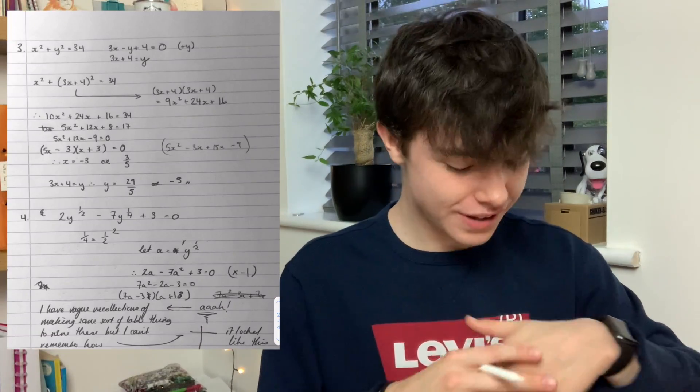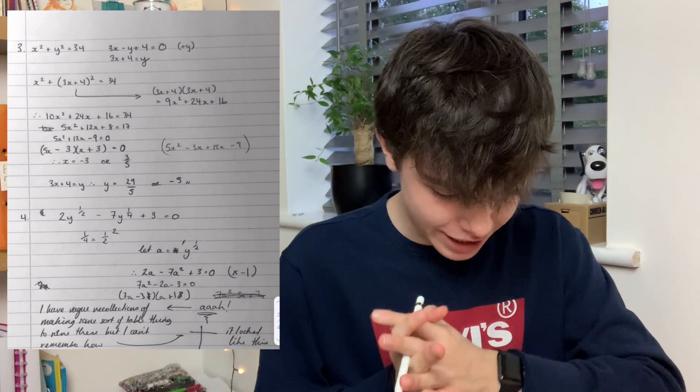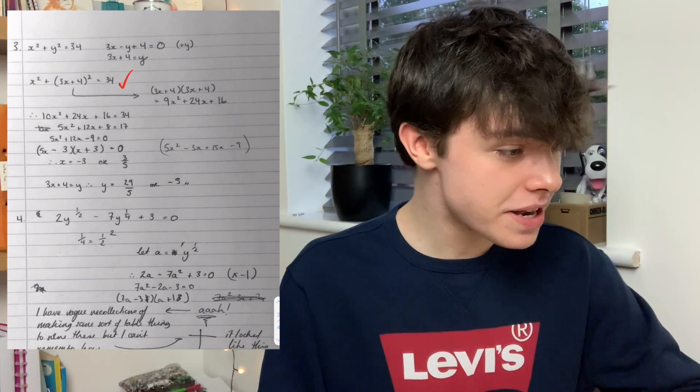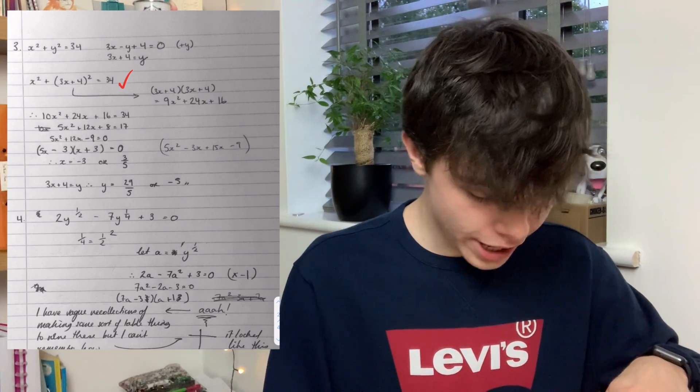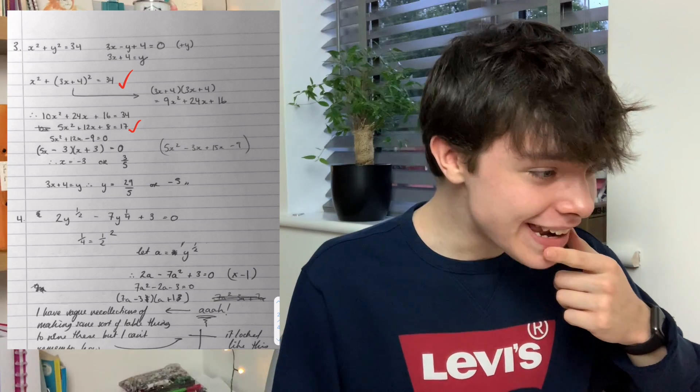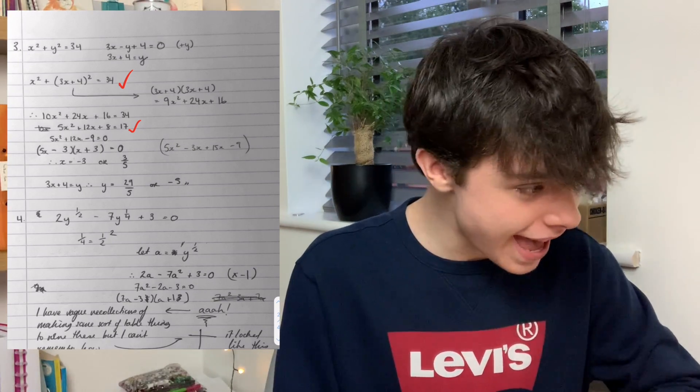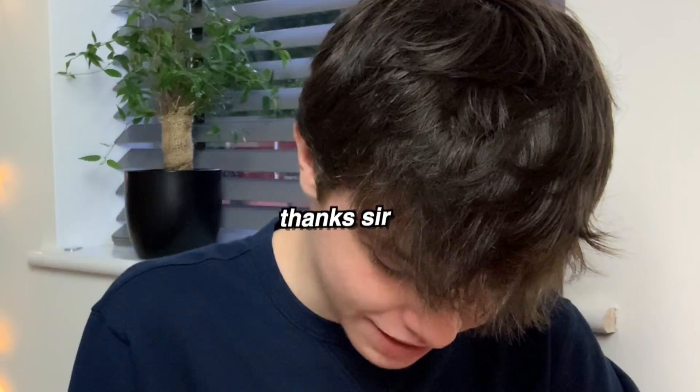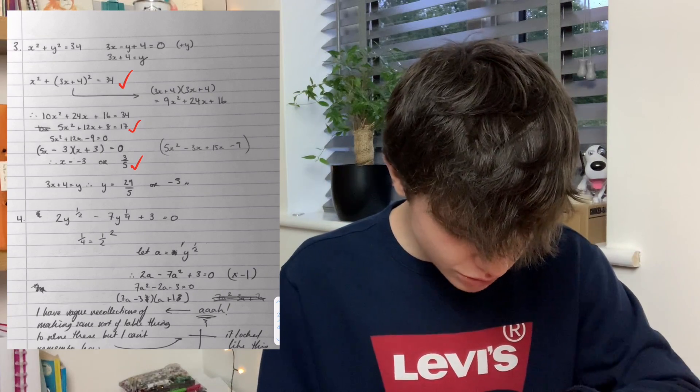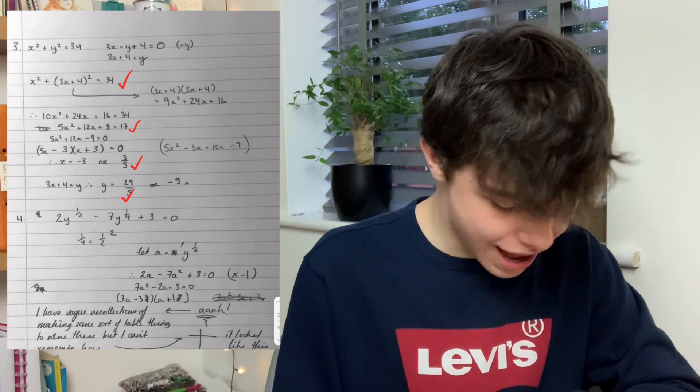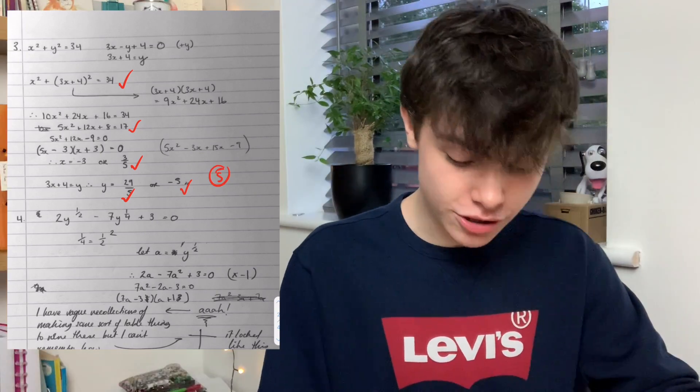The next question was a simultaneous equations question with a circle and straight line. First mark is there. Then the next mark is correct three term quadratic in solvable form which is there. It's going well. Then the next mark is an attempt to solve the quadratic. Yes that's correct. And then correct x values and correct y values. Substituting those back in minus 29 over 5 and minus 5. There is a full five marks for question three.